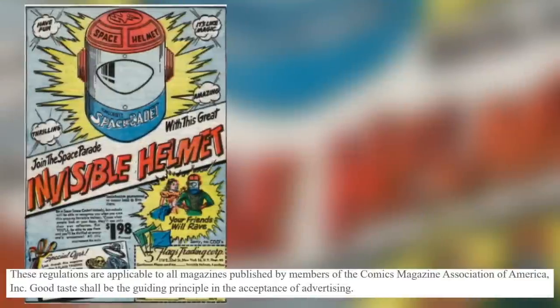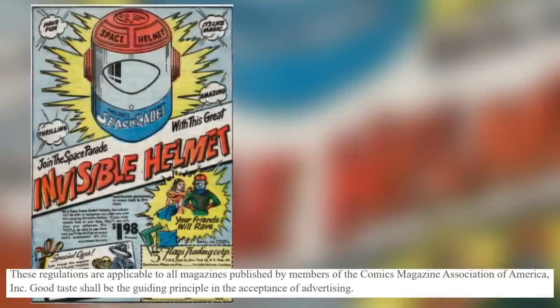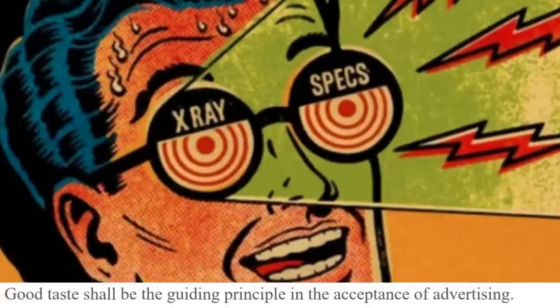Now we're on to the last part — the code for advertising, which is the part people tend to skip over. These regulations are applicable to all magazines published by members of the Comics Magazine Association of America. All the companies got together under this umbrella to appease the public. I imagine most people forgot about comics after the media cycle moved on — news cycles even then moved quickly — and then this code would linger for decades. It's very interesting to think about how these moments of moral panic can have these lingering effects. Good taste shall be the guiding principle to the acceptance of advertising.